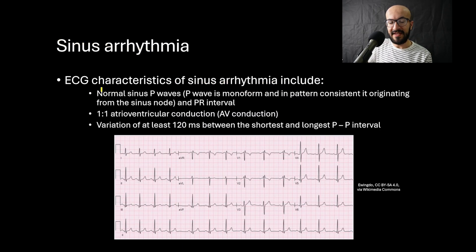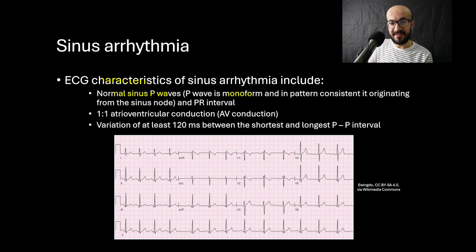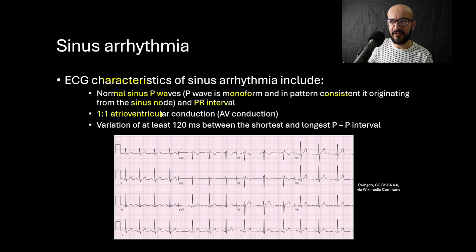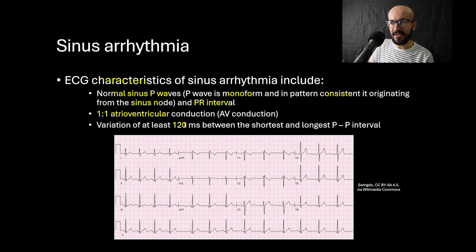The ECG characteristics of sinus arrhythmia include: normal sinus P waves, meaning the P waves are monomorphic — all P waves have the same form and are consistent with originating from the sinus node, with a normal PR interval. The second characteristic is one-to-one atrioventricular conduction, meaning for every P wave there is a QRS complex. The third characteristic is a variation of at least 120 milliseconds between the shortest and longest P-to-P interval.